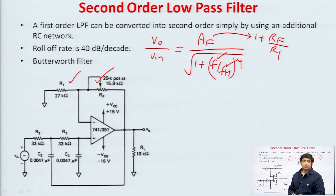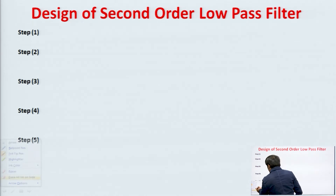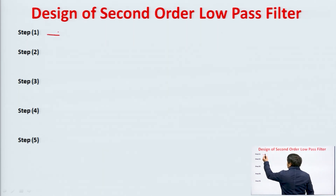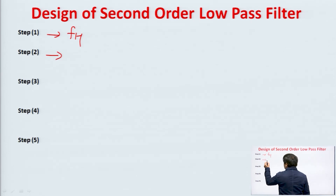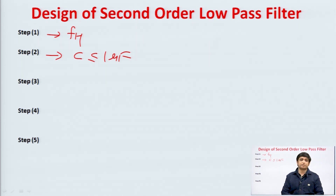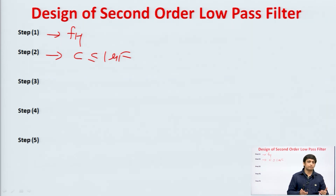This is the voltage gain equation obtained by applying nodal analysis to the circuit and simplifying. This covers the transfer function and cutoff frequency of the second order low pass filter. Now, the design steps of the second order filter are the same as the first order. Step 1: decide the cutoff frequency, which is normally given. To achieve this cutoff frequency, select some value of C that should be less than or equal to 1 microfarad. We select that value of capacitor which is easily available in the market.